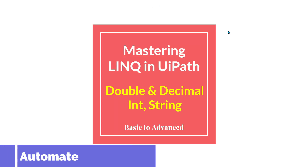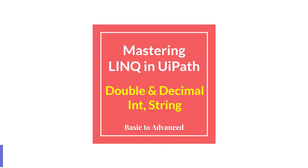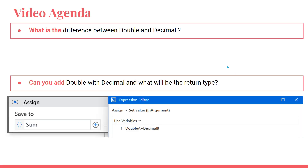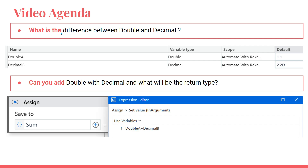Welcome back to Automate with Rakesh. In this video we will learn a very interesting topic around double, decimal, integer, and string. Let me show you the question: what is the difference between double and decimal? I have created a double variable and given 1.1, and a decimal variable given 2.2. What is the 'd' written there - is it wrong or right? All these questions we will clarify in this video.